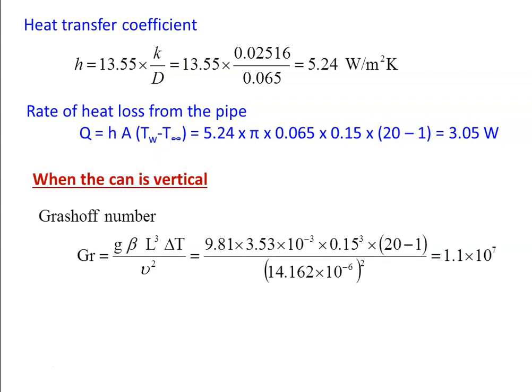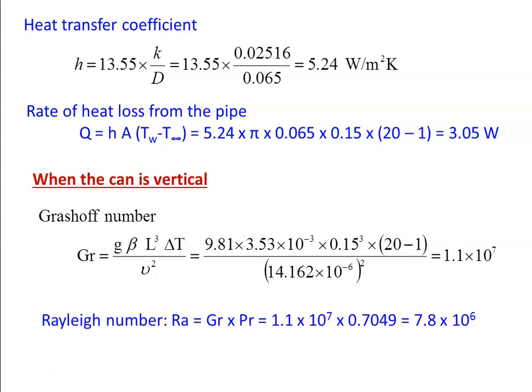When the can is vertical, calculate Gr·Pr with reference to the length (height) of the vertical cylinder: Gr = G·β·L³·ΔT/ν² = 9.81×3.53×10⁻³×0.15³×19 / (14.162×10⁻⁶)² = 1.1×10⁷. Rayleigh number = Gr·Pr = 1.1×10⁷×0.7049 = 7.8×10⁶.